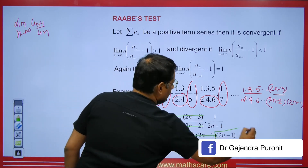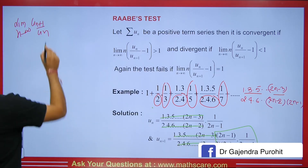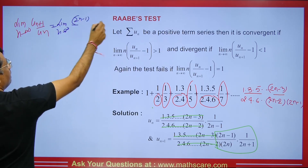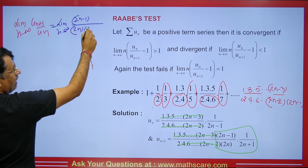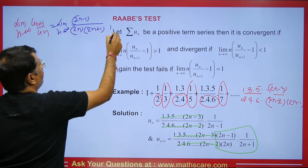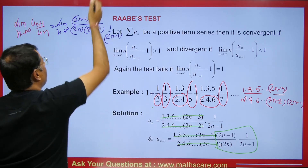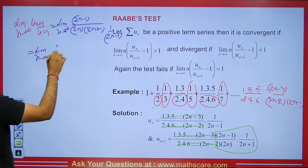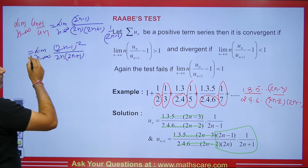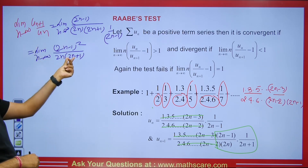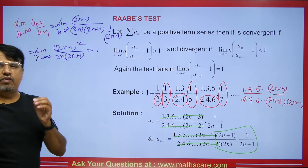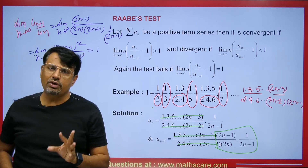When we evaluate the limit, we are left with (2n − 1)² divided by (2n)(2n + 1). As n tends to infinity, both top and bottom give 4n², so they cancel each other and the limit equals 1. Since the value is 1, the D'Alembert Ratio Test fails, so we will use Raabe's Test.